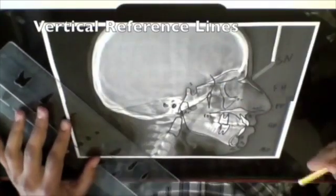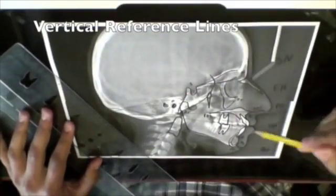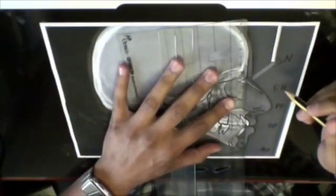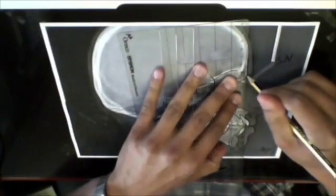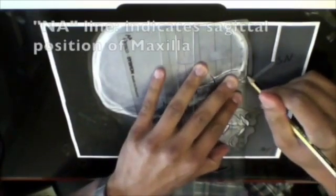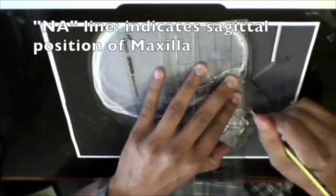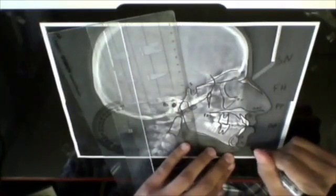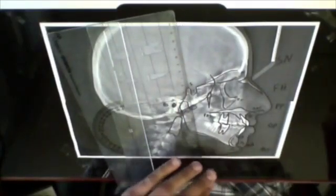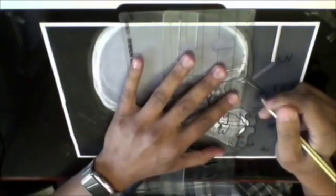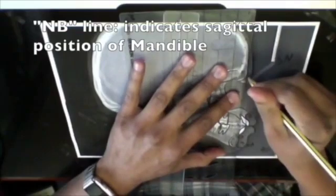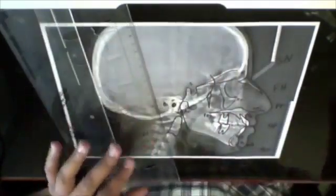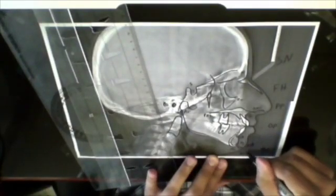Now you can move on to drawing your vertical reference lines starting with the line that goes from N point to A point, or NA. This line is useful to check the position of the maxilla. Next you can draw NB which is related to the sagittal position of the mandible. You can always mark these lines to make it easy to recognize which is which.